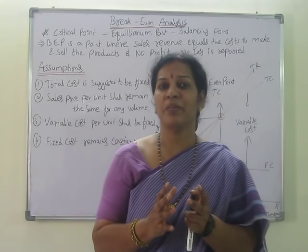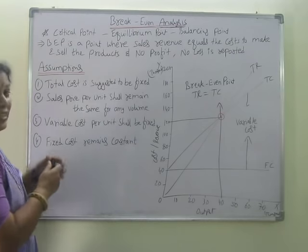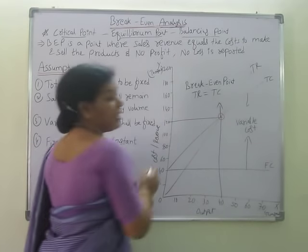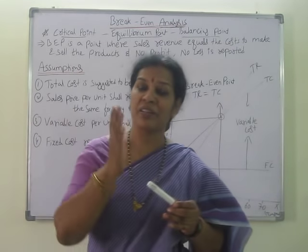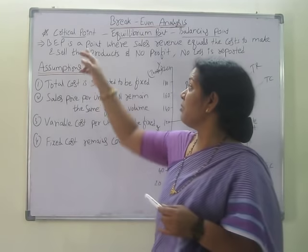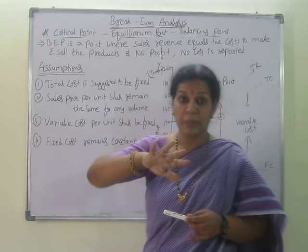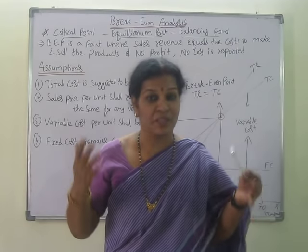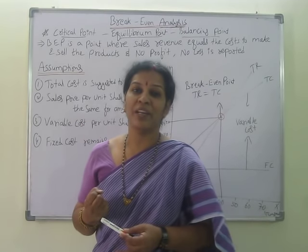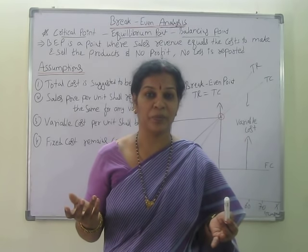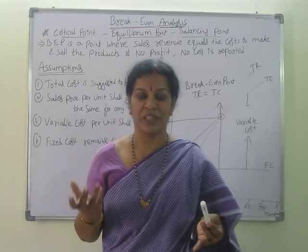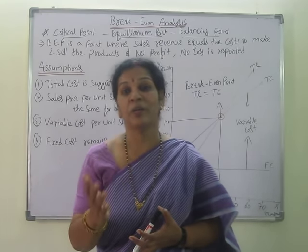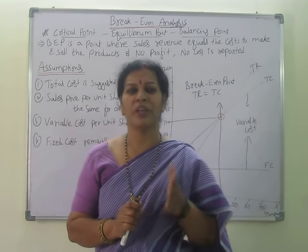You can call it breakeven point, breakeven analysis, or also a critical point, equilibrium point, or balancing point. It is called a critical point because it is the minimum stage we have to reach. Equilibrium means making it balanced. Once you reach it, you will be happy that whatever struggle you have done, you have now come to the breakeven level and after that you are going to get profits. That is why breakeven analysis is very important from both an economics and a cost accounting point of view.